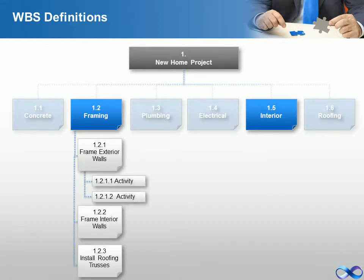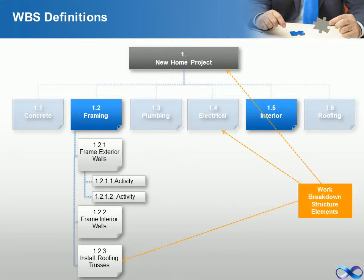Let's go through some basic definitions in the construction example we developed together. Please note the added code scheme identifiers. Before we get started, let's establish some terms to facilitate communication within this lesson. Any entry at any level in the work breakdown structure is referred to as a work breakdown structure element. Deliverable: any unique and verified product, result, or capability to perform a service that must be produced to complete a process, phase, or project.